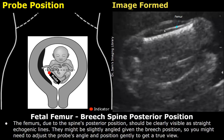This is the femur in the near field, and this is the other femur in the far field. We do not see it very clearly because the near femur is casting posterior acoustic shadowing, which is affecting the visualization of the far-field femur.